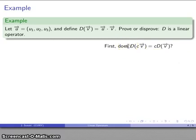First, does our operator D preserve scalar multiplication? If I apply D to c times a vector, do I get c times D applied to the vector? Let's see if we can build a bridge.